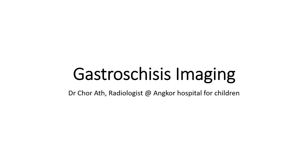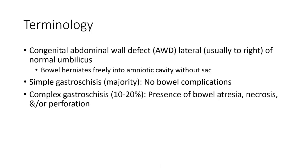Hello everyone. Today I'm going to show you about gastroschisis imaging. Gastroschisis is a condition of congenital abdominal wall defects, located lateral to and to the right of the normal umbilicus. Bowel herniates into the amniotic cavity without a sac.